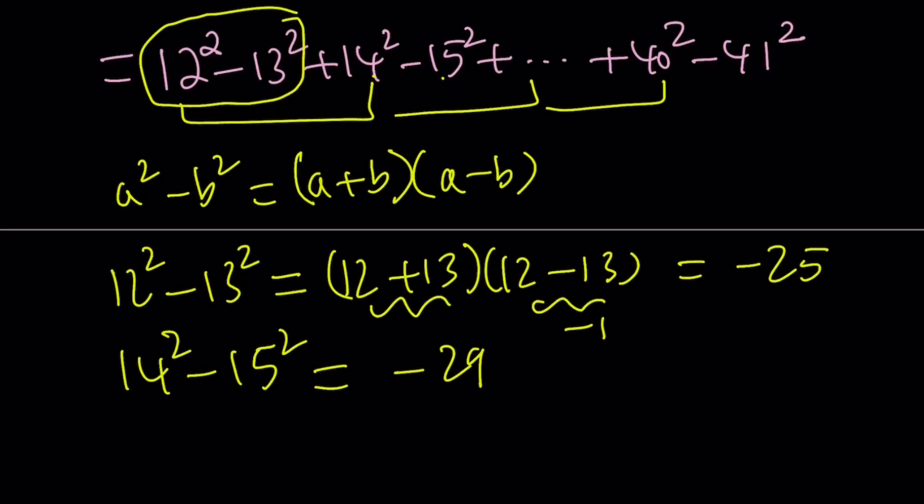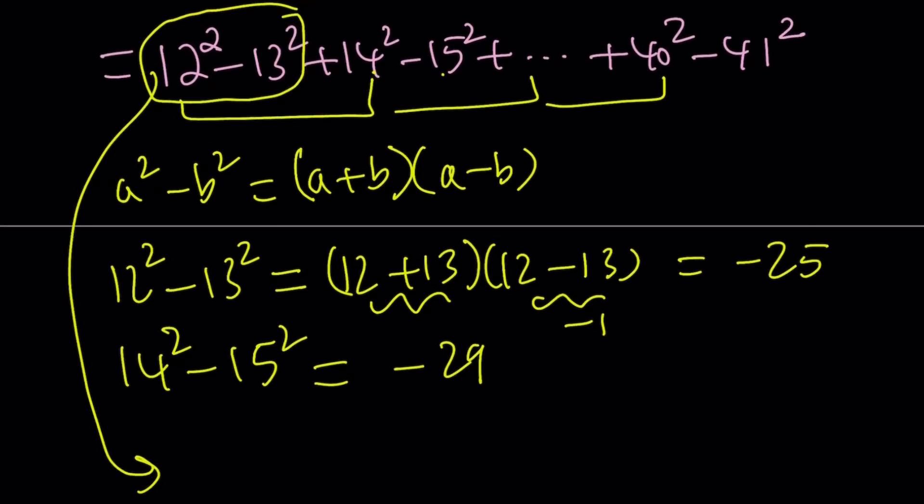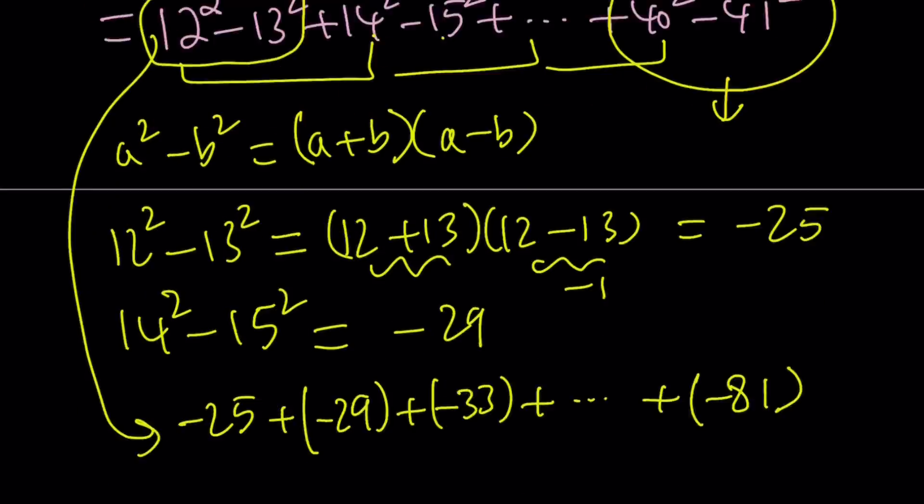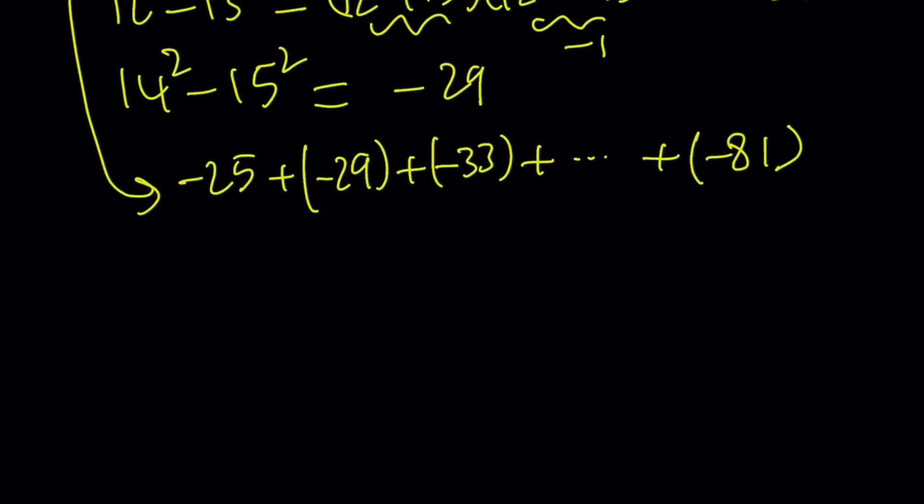So in other words, this sum, this sum right here, turns into negative 25 plus negative 29 plus negative 33 dot dot dot, all the way up to negative 81. And the last one is negative 81 because, take a look at that, 40 plus 41 is 81 and we have to negate that. Make sense? So these are odd numbers, but they skip. So they're basically odd numbers that leave a remainder of 1 when divided by 4, but they're negatives. Don't worry about it.